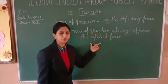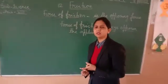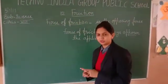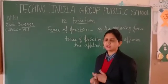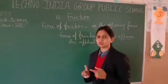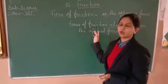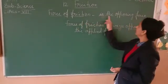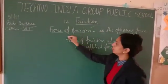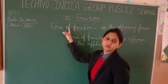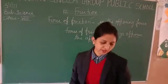Whatever force we have applied on that object, the force of friction is always opposing in direction — not in the same direction. It always opposes or retards the motion of that object. So, force of friction is the opposing force. That is the main definition of the force of friction. It is the opposing force.